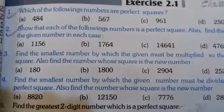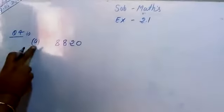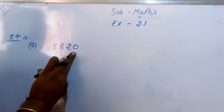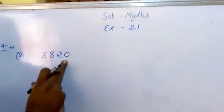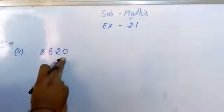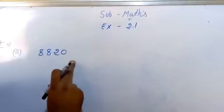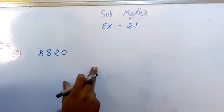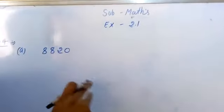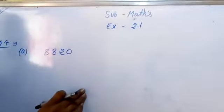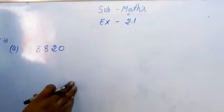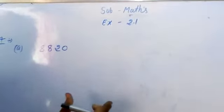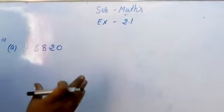Question number 4, part A: 8820. Yeh number hume diya gaya hai. Hume dekhna hai ki is mein kis number se, chote se chote number se divide karein, taaki jo naya number hoga woh ek perfect square ban jaye. Aur hume saath hi saath yeh bhi batana hai ki jo naya number hoga woh kis number ka hamara square hoga.